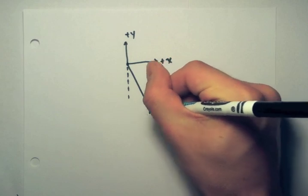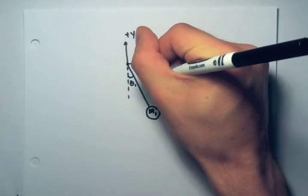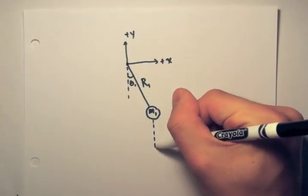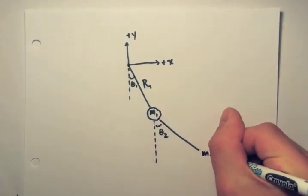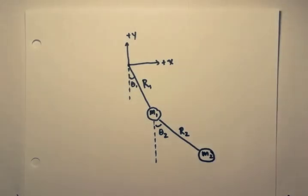We have two masses. Mass 1 is a distance r1 and an angle theta 1 from the negative vertical, and then mass 2 is an angle theta 2 from the negative vertical and a distance r2 from mass 1.